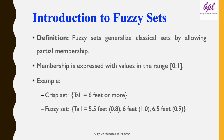For example, a crisp set defines 'tall' as anyone who is 6 feet or more. If a person is 6 feet tall, they are tall. If a person is less than 6 feet — say 5.9 feet — they are not tall, even if they are very close to the threshold.